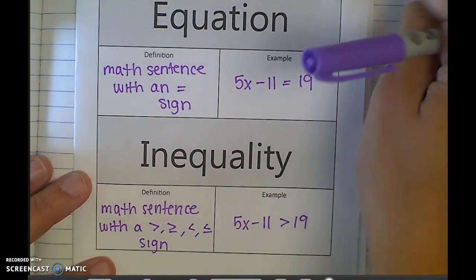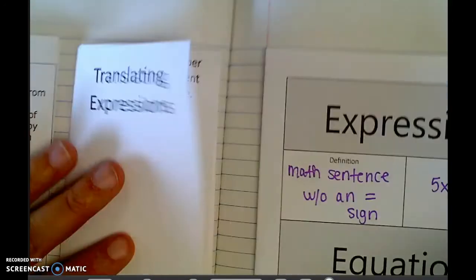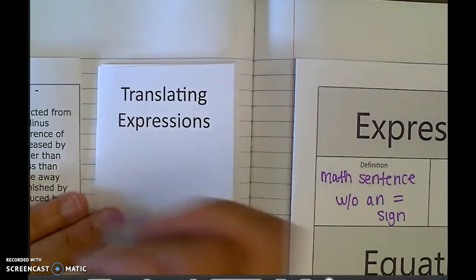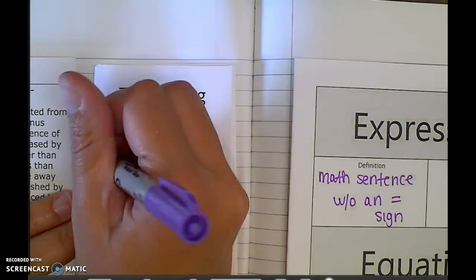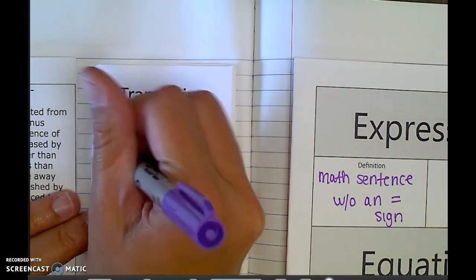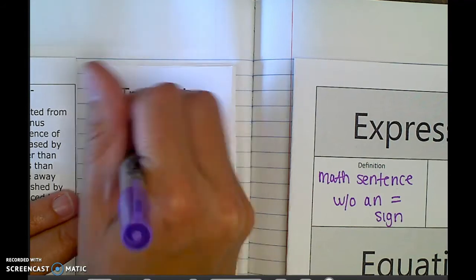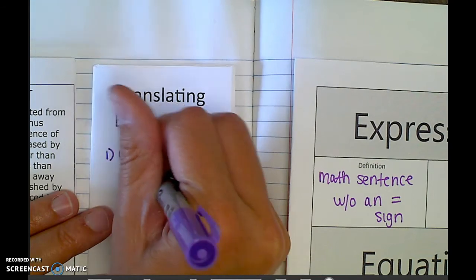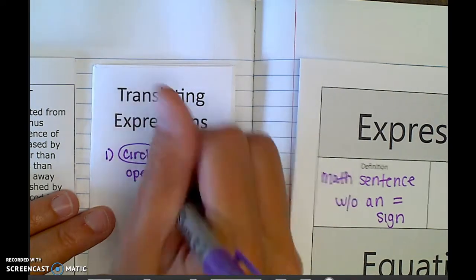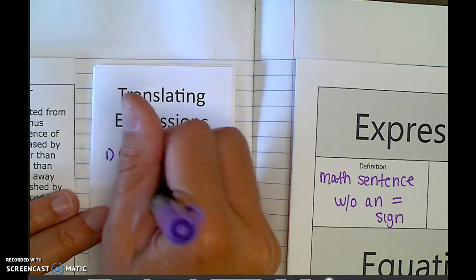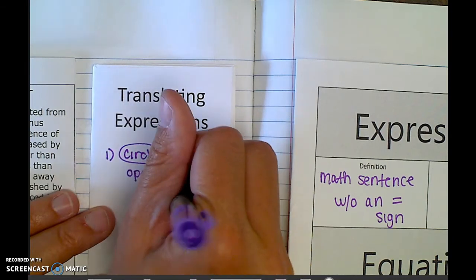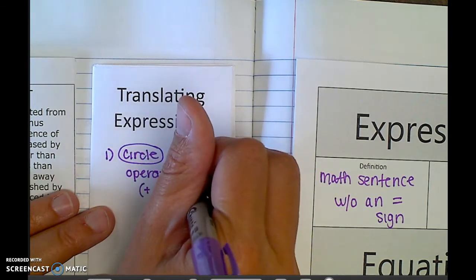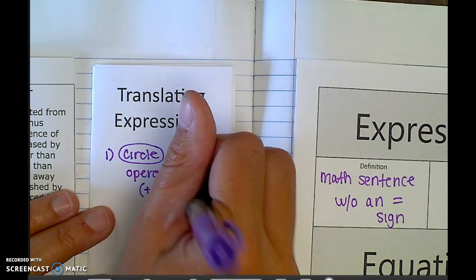Skipping the inside of that just for a second, let's look over here at translating expressions. What I want to do is we're going to go through and we're going to first of all circle operators. Now operators are like plus, minus, multiplication, division, maybe parentheses, things like that.